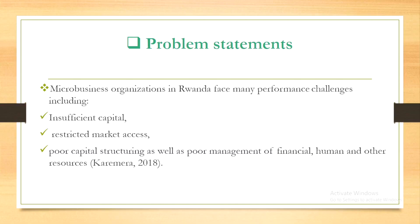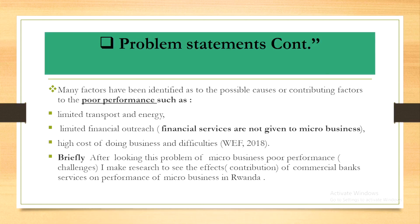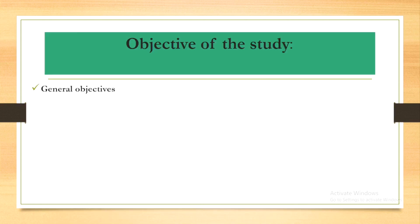We want to see the objectives. The objective in a dissertation is divided into two parts. One is the general objective, where we try to assess your topic — our topic is about the effect of commercial bank services on performance of microbusiness. So we try to see how this independent variable, which is commercial bank, will be affecting or influencing the performance of microbusiness in Rwanda.